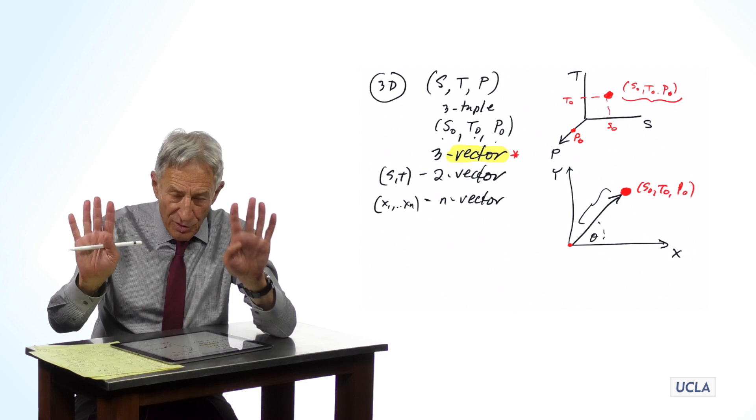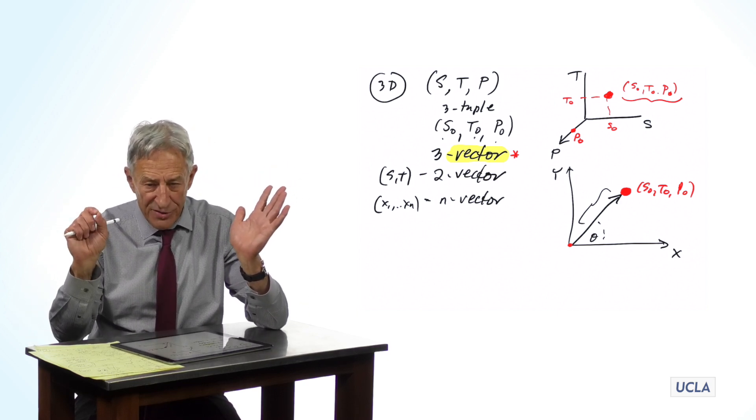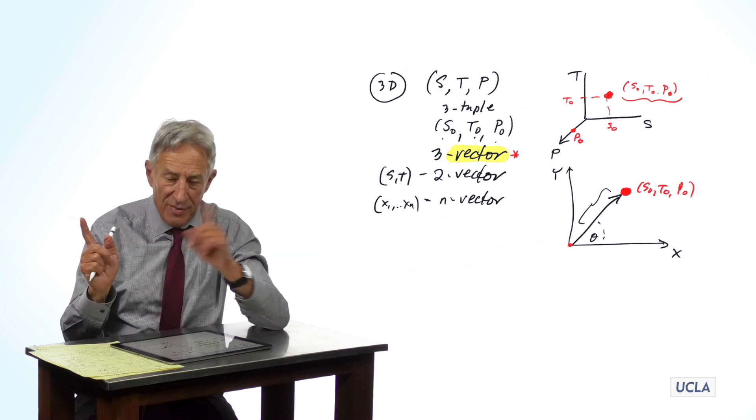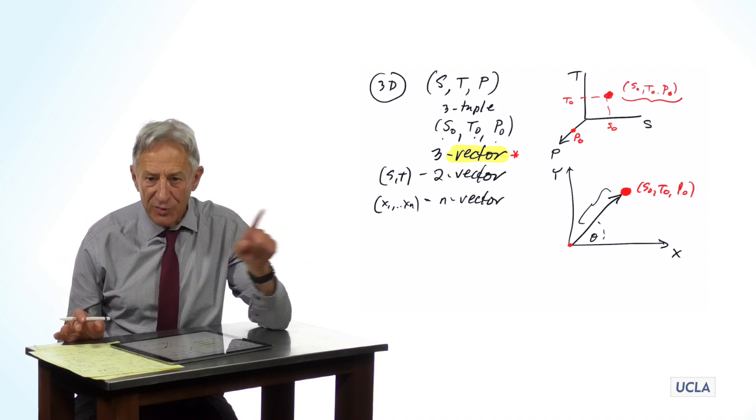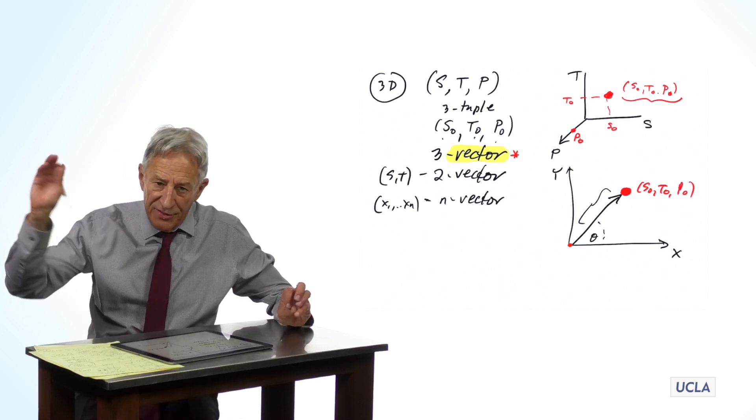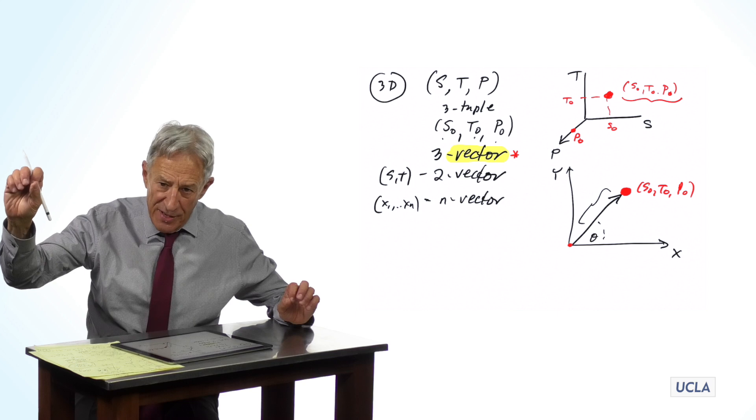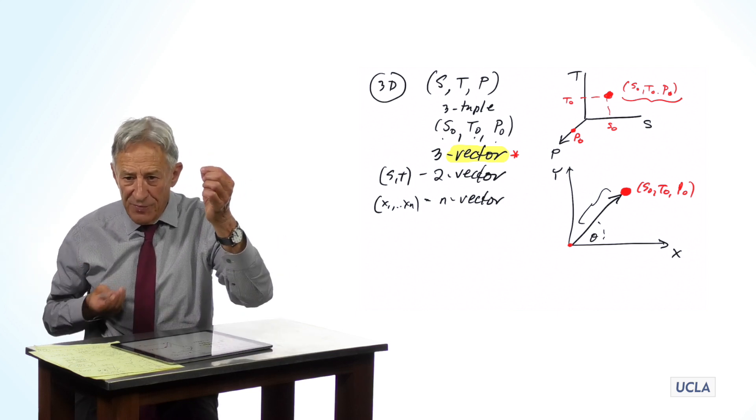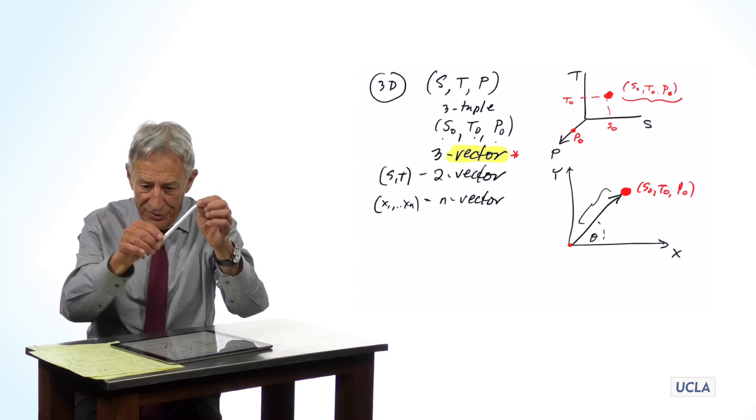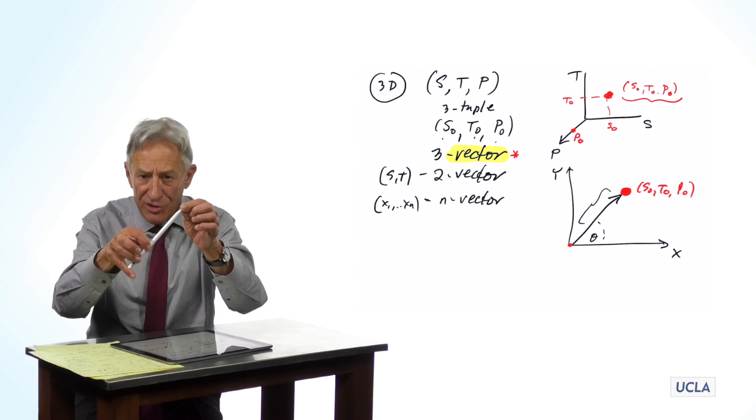So those are two equivalent terminologies, arrows and state points, and we are going to use them both heavily. As a matter of fact, we're going to go back and forth between them a lot. So let's get used to that. A three-tuple is a point in three-space, and that point in three-space can also be understood as the arrow pointing to that point in three-space from the origin.